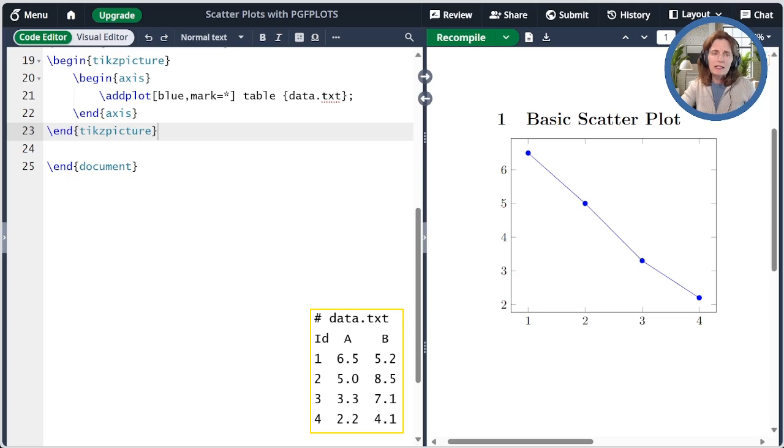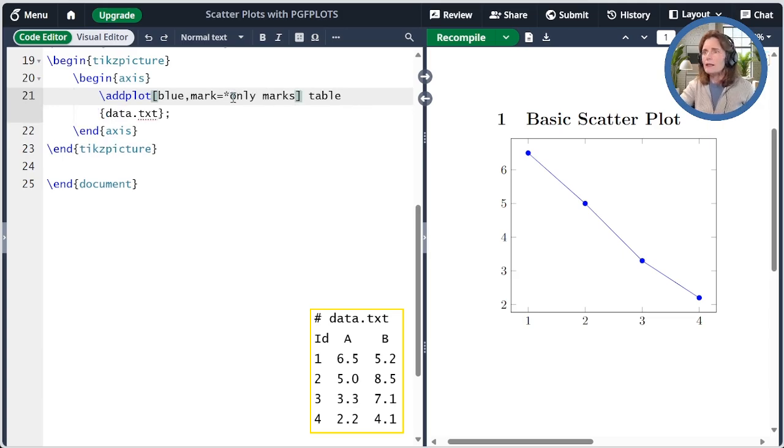To make this a scatterplot, we merely have to add the plot option, only marks. So I'll add that here. And now when we recompile it, we see that we have only the marks and not the line that attaches them.